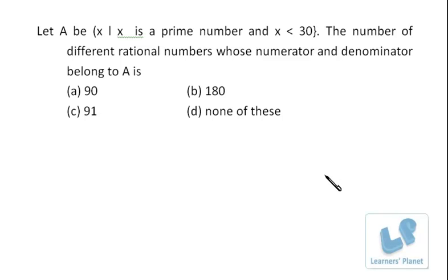Now friends, let's try this interesting question. Let A be such that x is a prime number and x is less than 30. The number of different rational numbers whose numerator and denominator belong to A is.